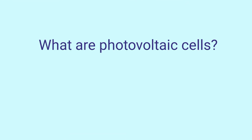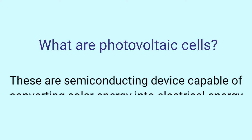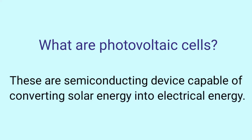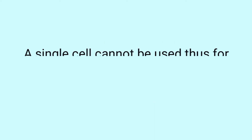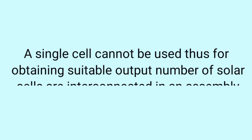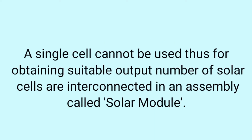First question: What are photovoltaic cells? These are basically semiconducting devices capable of converting solar energy into electrical energy. A single cell can't be used, thus for obtaining suitable output, a number of solar cells are connected in an assembly called a solar module.